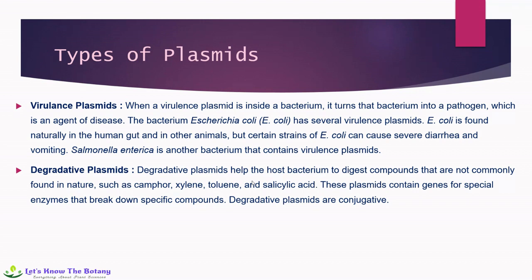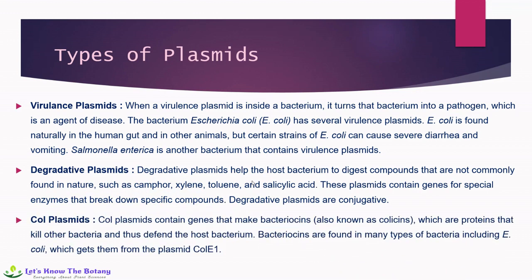Degradative plasmids contain genes for special enzymes that break down specific compounds. Degradative plasmids are conjugative. The last type is col plasmids, which contain genes that make bacteriocins — also known as colicins — which are proteins that kill other bacteria and thus defend the host bacterium. Bacteriocins are found in many types of bacteria including E. coli, which gets them from the plasmid called ColE1.